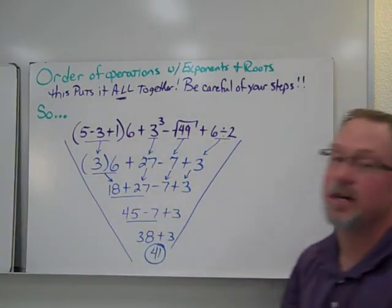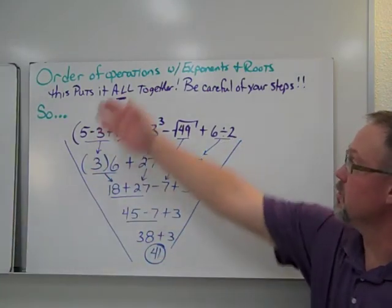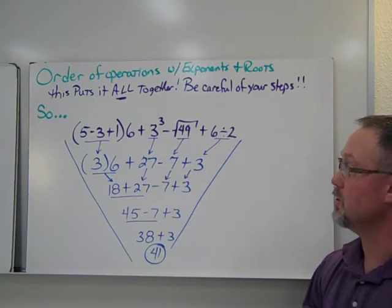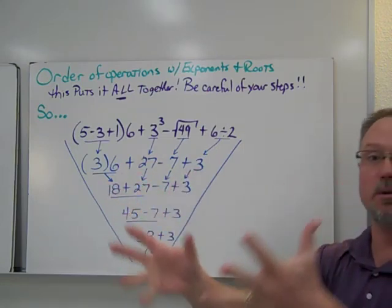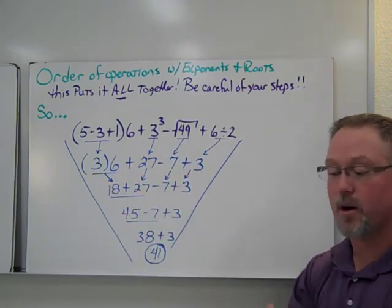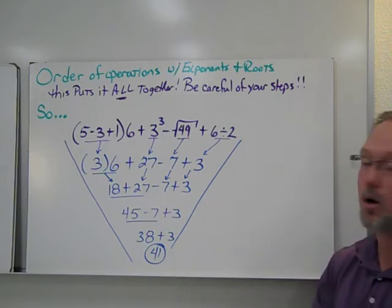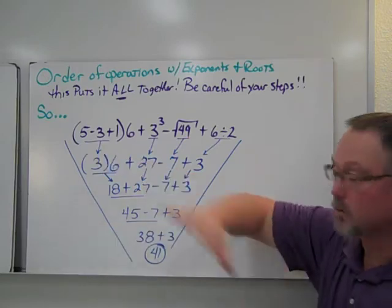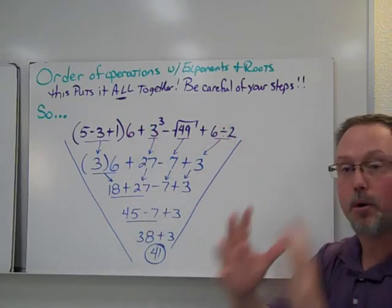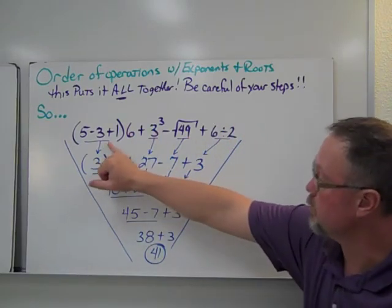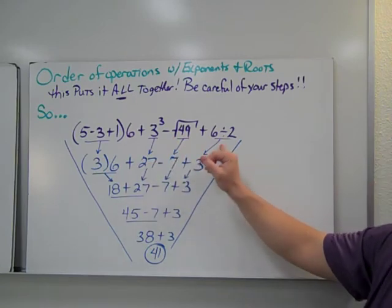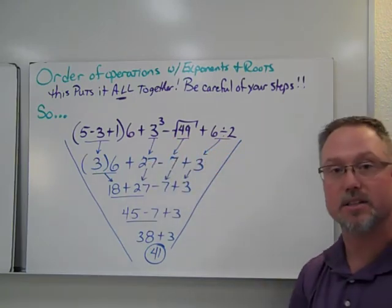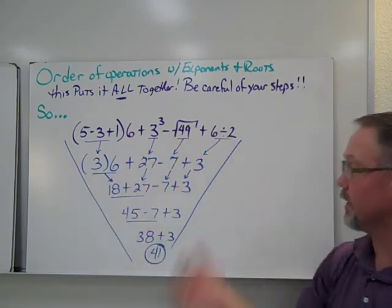So the last part of this section is just putting everything together. We're going to do the order of operations with exponents and roots. So we're going to give you everything that we've done, squares, order of operations, roots, cube roots, square roots, all that stuff, and we're going to put it into a big problem. So again, it's a big problem, but we want to do it in parts. So we could take this part, this part, this part, and this part, and do it kind of at the same time, 1, 2, 3, if you want to go left to right, that's fine.